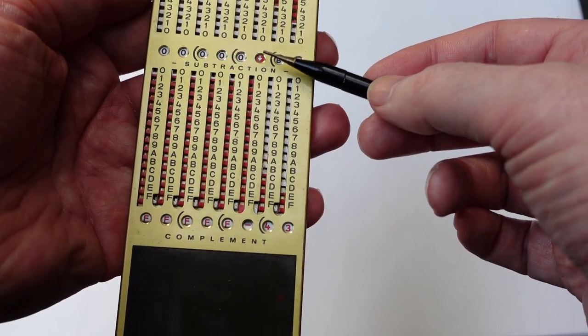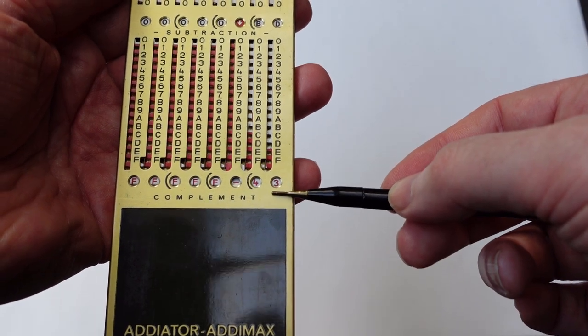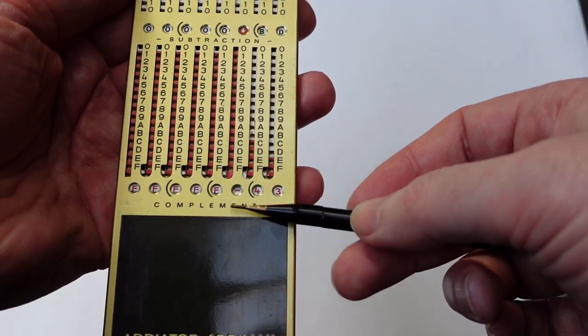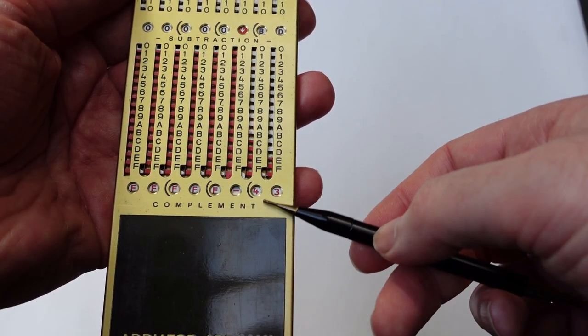And the arrow down means that you have to look at this complement register to see the result. And it says minus 43. And that is the result. So it's a signed result here.